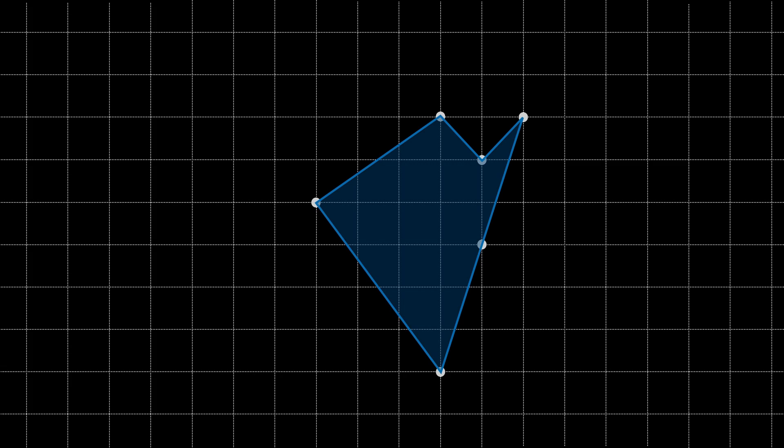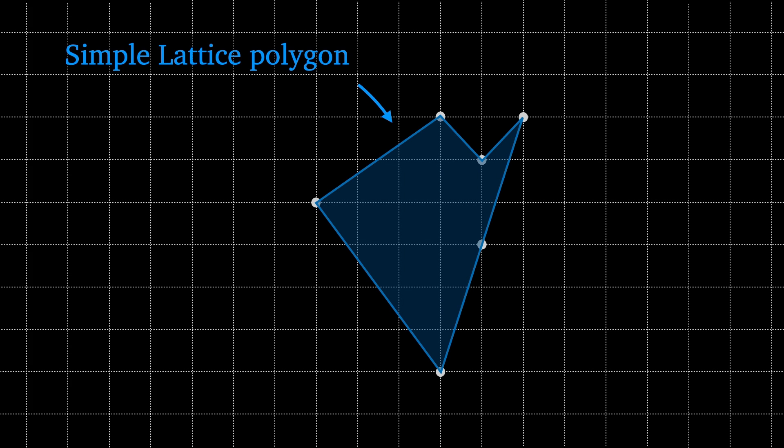This is a simple lattice polygon. It's a polygon such that each of its corners lie on the lattice points and it's called simple because its lines don't overlap or cross and it doesn't contain any holes.